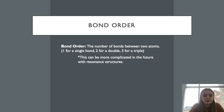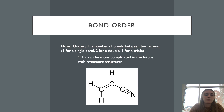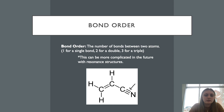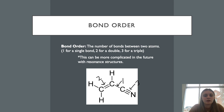Hopefully those examples showed how to draw Lewis structures — it just takes time and practice, and you can follow the step-by-step in the book. Now let's talk about bond order, which is the number of bonds between two atoms: one for a single bond, two for a double bond, and three for a triple bond. Looking at C3H3N, we can identify a triple bond with order three, a single bond with order one, and a double bond with order two.